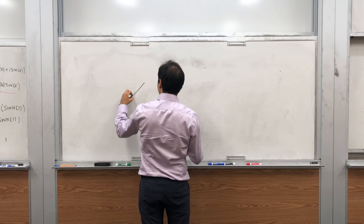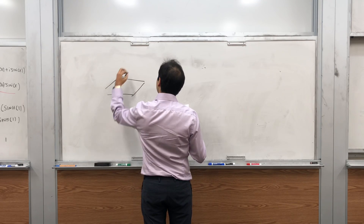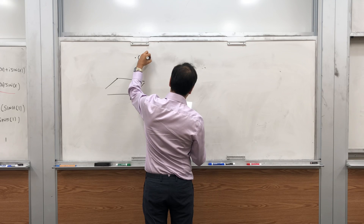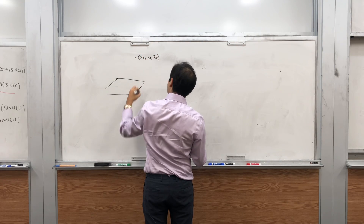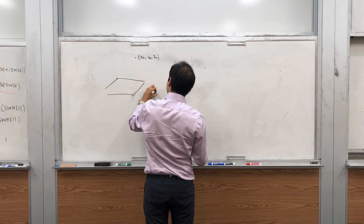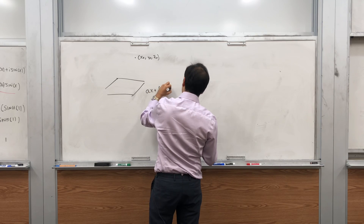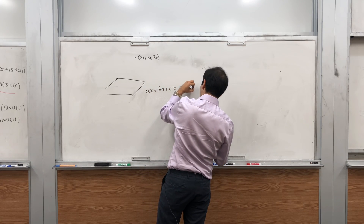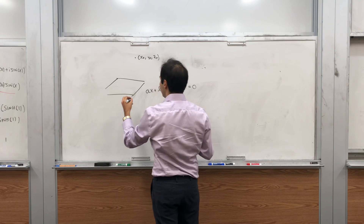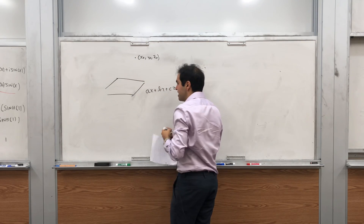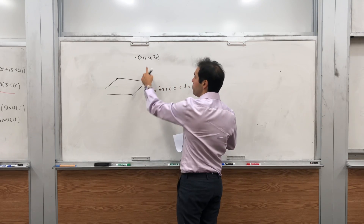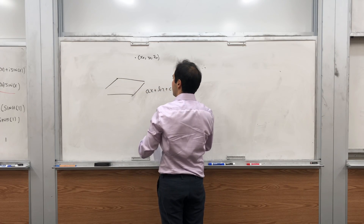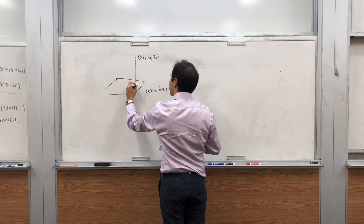So here's the setup. Suppose you have a point (x0, y0, z0) and a plane Ax + By + Cz + D = 0. The question is: what is the smallest distance between this given point and the plane?